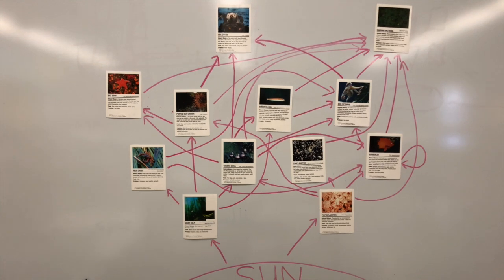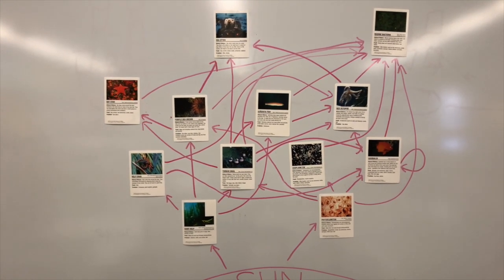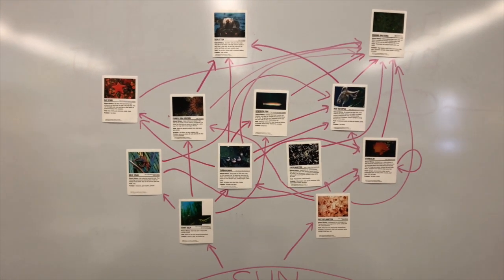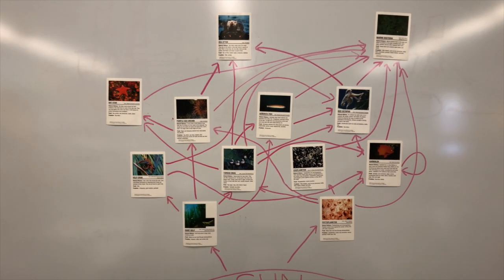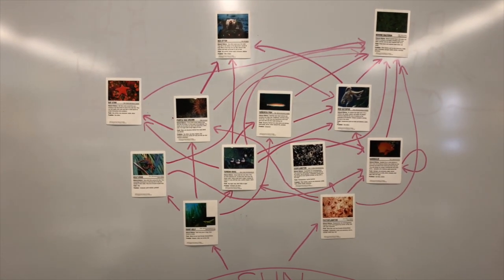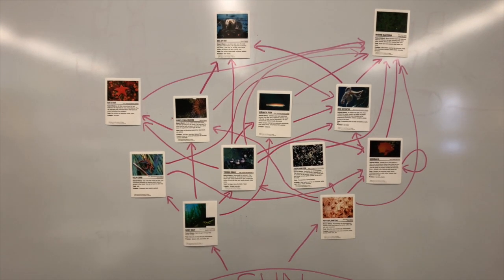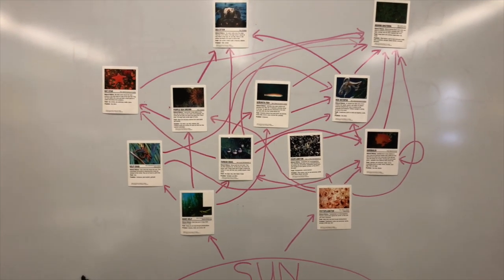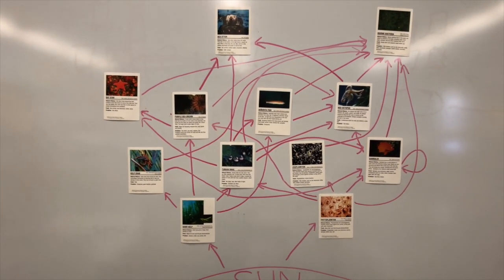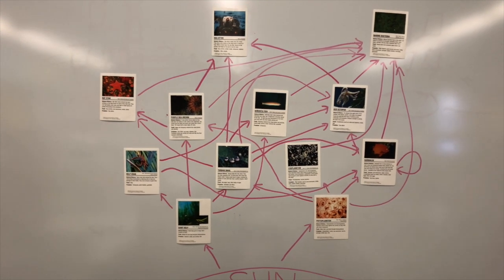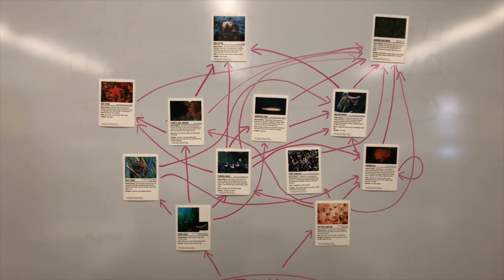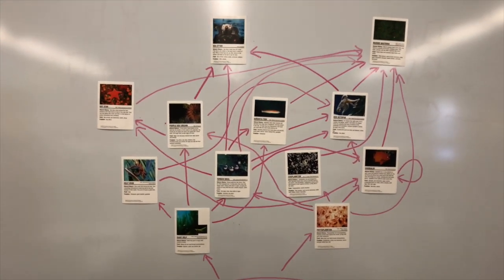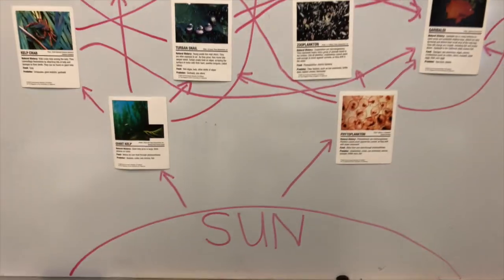Here is my food web for the kelp forest in Monterey Bay. You can see it's very connected. One of the things that's very different about a food chain and a food web is that in a food chain, it's very clear — one thing eats the other, the next thing eats the next, it's very linear. But in a food web, there's all kinds of competition.